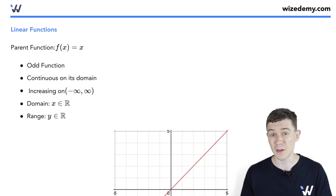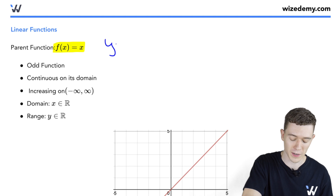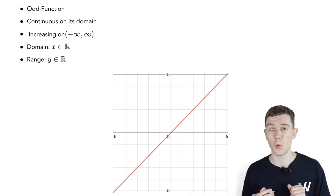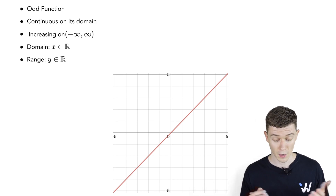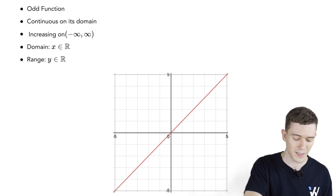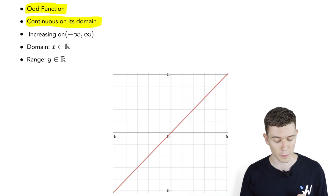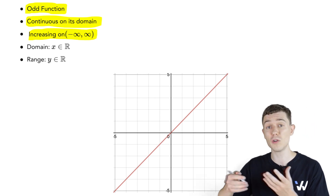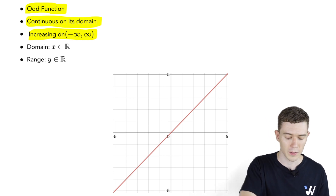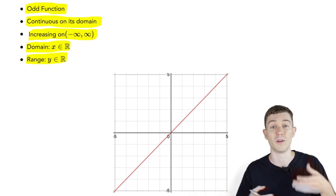One of the most famous and straightforward parent functions is the linear function f of x equals x — just a line through the origin with slope 1. This line, if rotated 180 degrees, would be the same picture, making it an odd function. It's also continuous — we can draw it left to right without picking up our pen. It's increasing, and its domain and range are all real numbers, stretching forever in every direction.